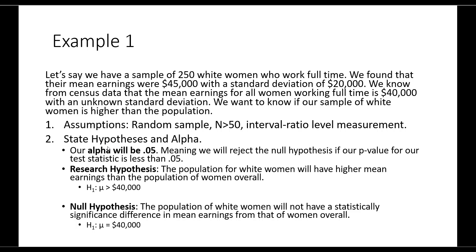We set our alpha at 0.05 — a moderately conservative threshold, meaning there is a 5% chance we are incorrect that white women make more than women overall. Our research hypothesis is that the population of white women will have higher mean earnings than the population of women overall: H sub 1 states the population of white women earns greater than $40,000 per year. Our null hypothesis is that the population of white women will not have a statistically significant difference in mean earnings from women overall — that they will earn around $40,000.